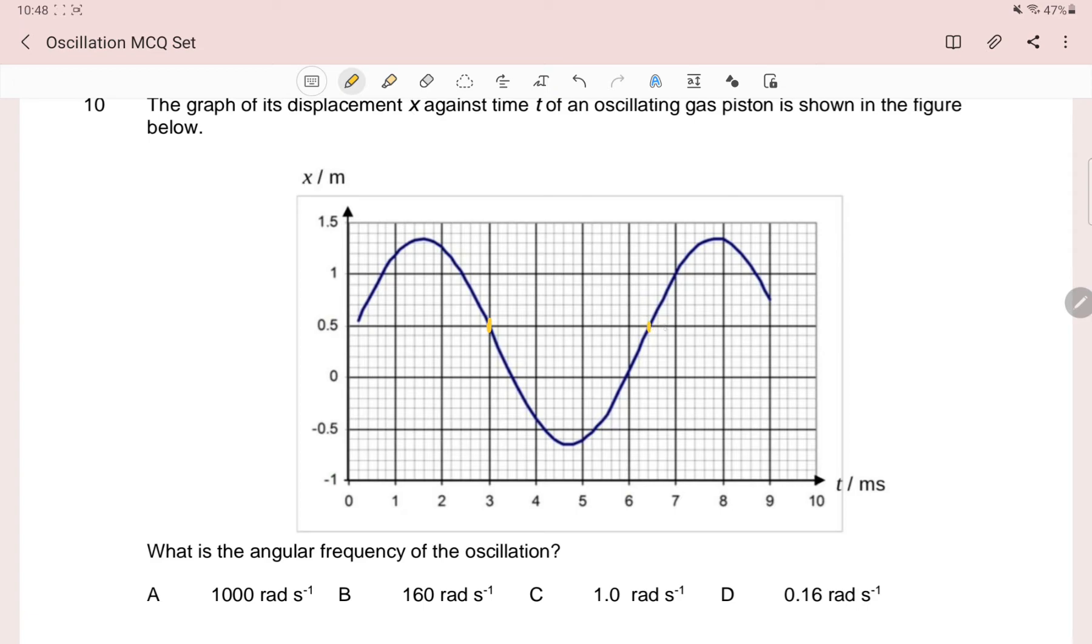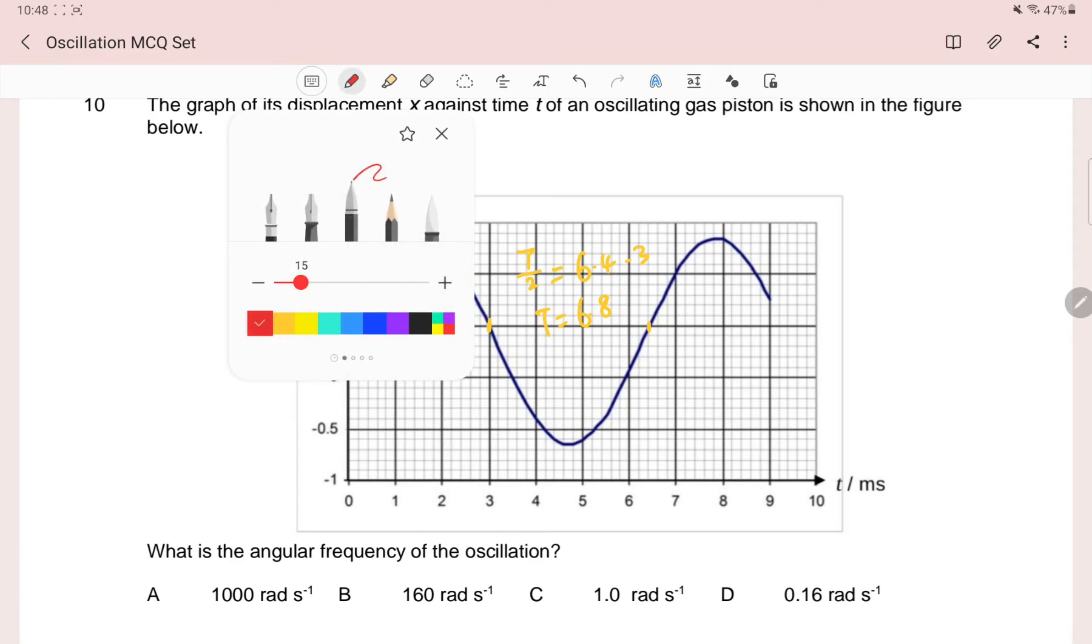You see that half of a period equals 6.4 minus 3, which is 3.4, so period equals 6.8. You use this to calculate the frequency, and of course this is wrong.